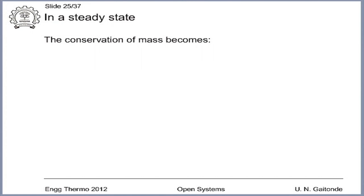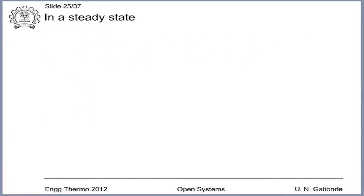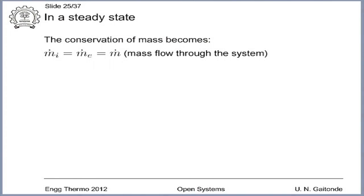In a steady state, we substitute our definition: these quantities are invariable with time but we set the time derivatives to zero. We put our left hand side to zero and, for convenience, transpose some terms. So the conservation of mass becomes m dot_i equals m dot_e, and if there is one inlet and one exit, both are equal. We use a common symbol m dot for them and call it the mass flow rate through the system.